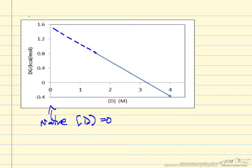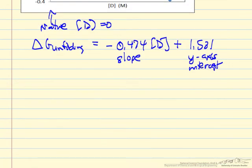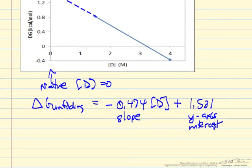So we can do a least squares fit to this line, just a linear regression. And if we do that, we get an equation that delta G of unfolding is related to the slope of the line, so this is the slope, times the concentration of the urea, plus the intercept, 1.531. So this is the y-axis.